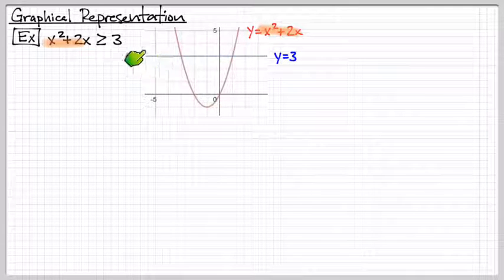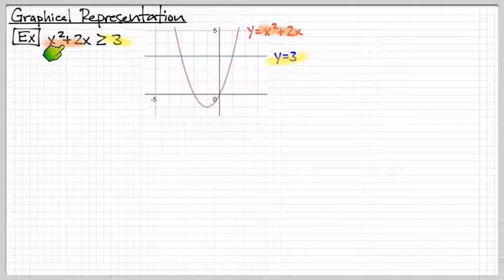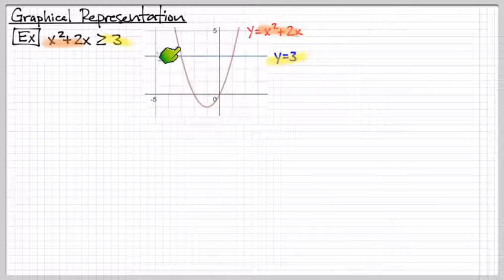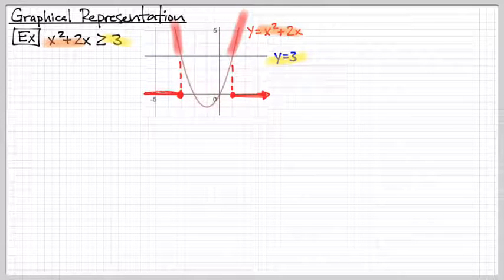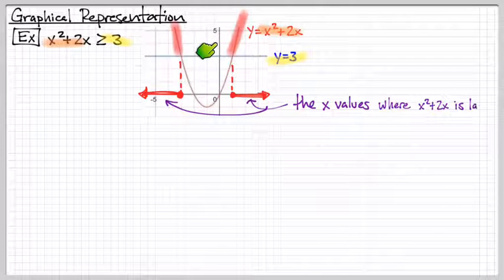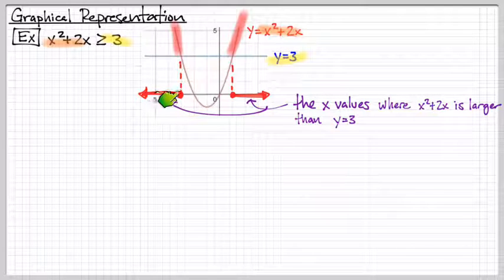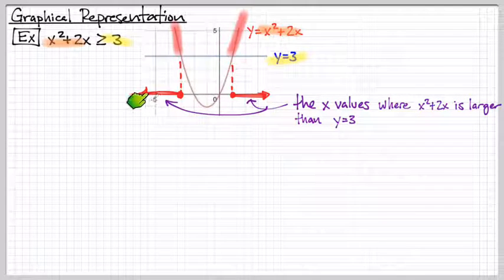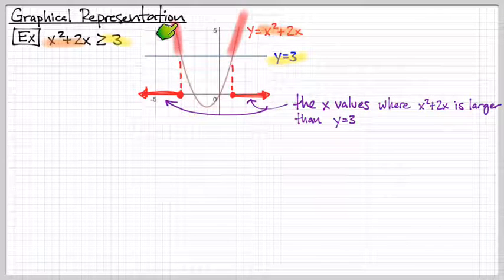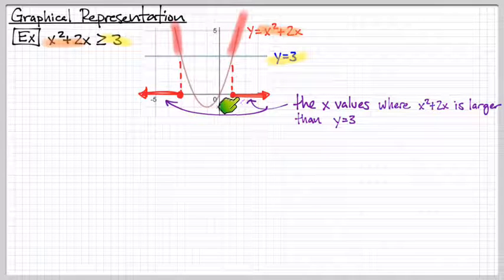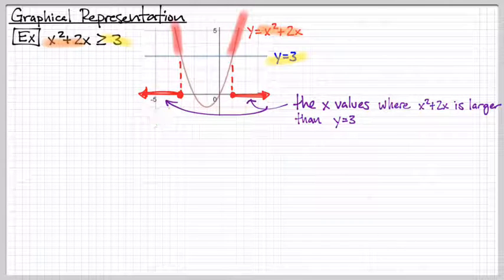And so where the red function is greater than the blue function, those are solution places. So this area right up here, where the red function is greater than the blue function. And then these x values down here are the x values such that the red function is greater than the blue function. So it's almost like the shadow of this and this down upon the x-axis. These are the solution points to this equation here.